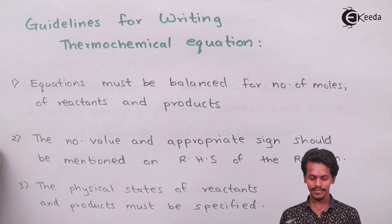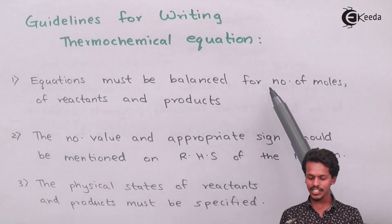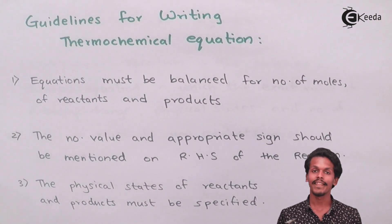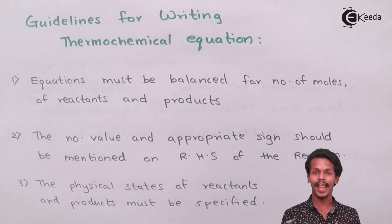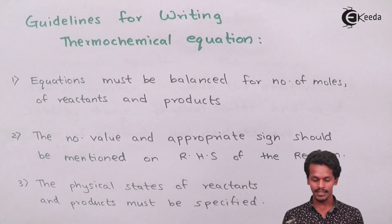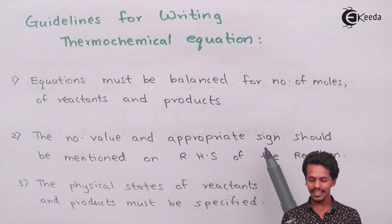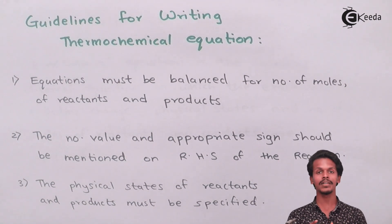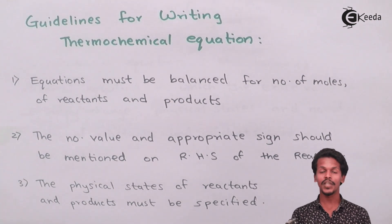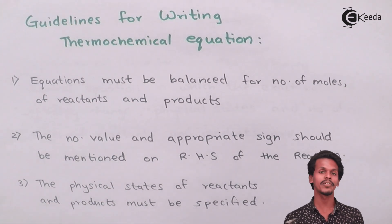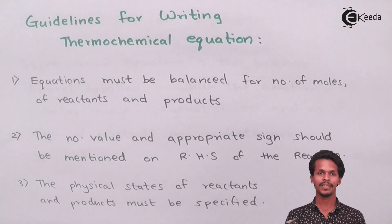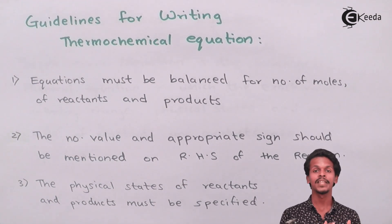Guideline one: the equation must be balanced for the number of moles of reactants and products — that is essential. Guideline two: the numerical value of ΔH with the appropriate sign must be mentioned on the right-hand side of the reaction. As we have seen in endothermic and exothermic reactions, after the balanced equation with physical states, we write ΔH on the extreme right with its positive or negative value.